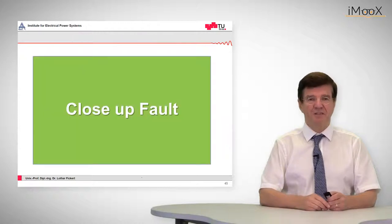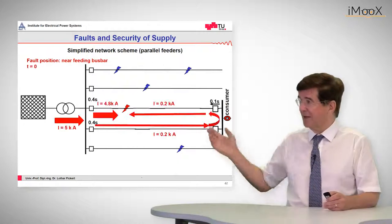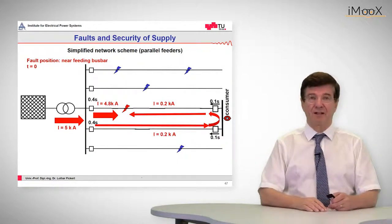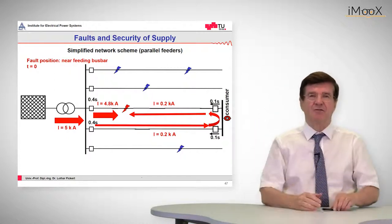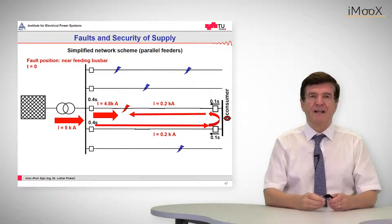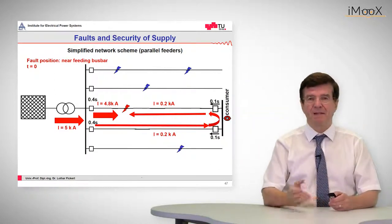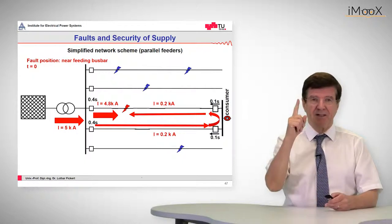The situation is different if we have a close-up fault as is indicated here. If the close-up fault occurs, we have a split of the total current of five kiloamps into a big current which goes directly to the faulty place and a smaller one that goes all the way around. And that may be, as indicated in this case, too small to start up any of those relays. So there is just one relay picking up, that's the upper one.